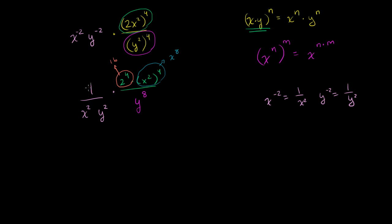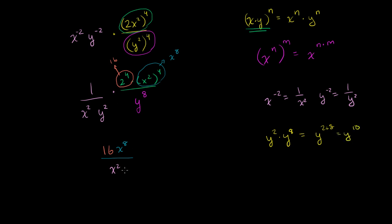If we multiply these two fractions together, my numerator is 16 times x to the eighth. And in the denominator, I have x squared, and then y squared times y to the eighth. What is y squared times y to the eighth? We have the same base, so we add the exponents. It's going to be y to the 2 plus 8, or y to the tenth power.